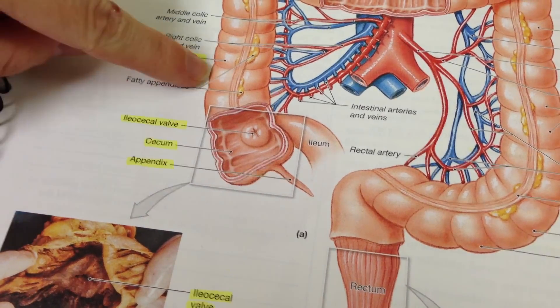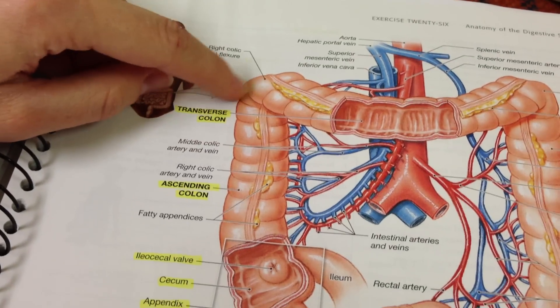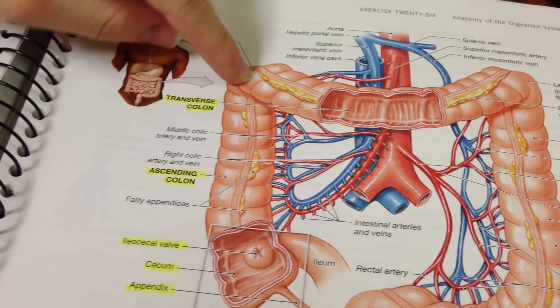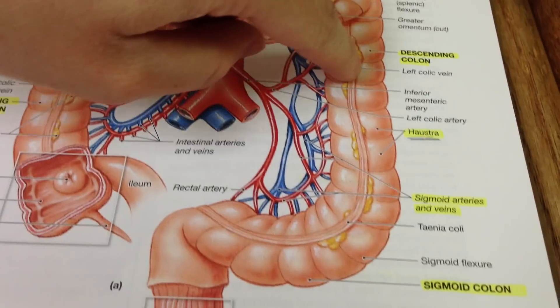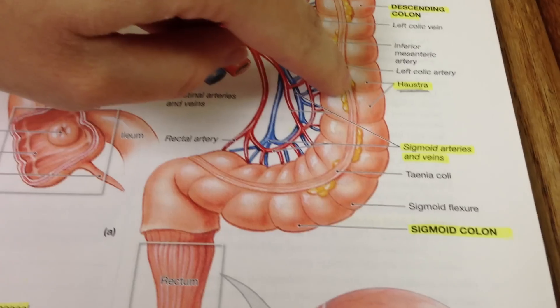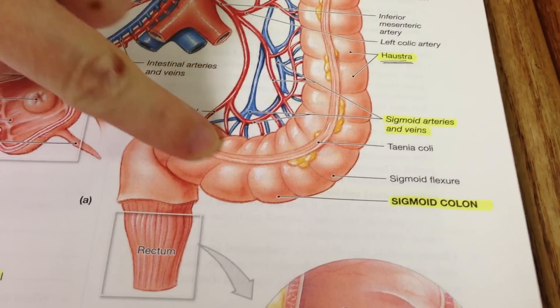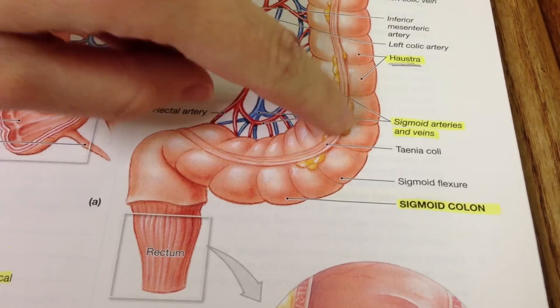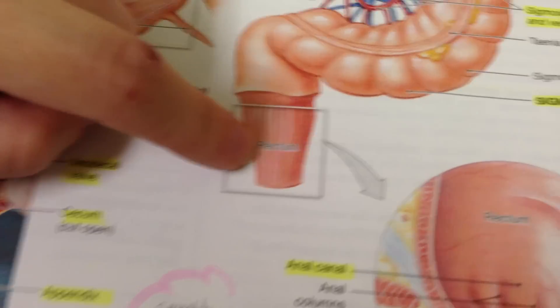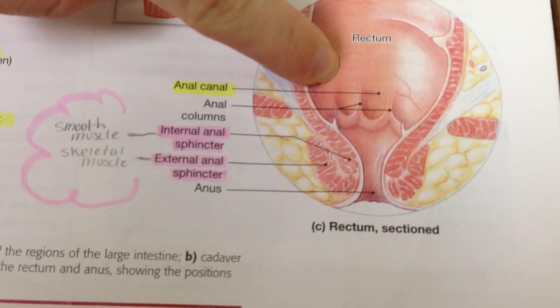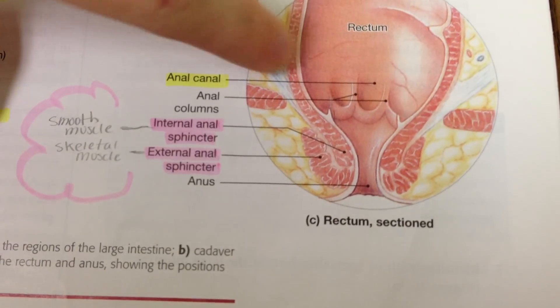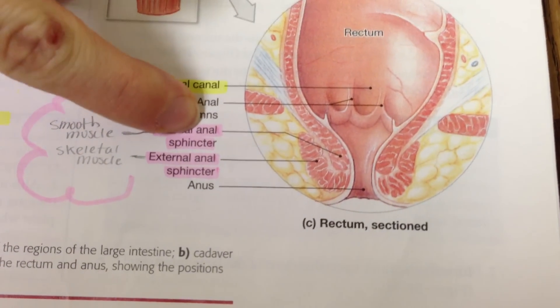It'll travel up the ascending colon, and then over through the transverse colon, and then down the descending colon. The S-shaped part is the sigmoid colon, the last part. It'll go into the rectum, and then down here, the anal canal.